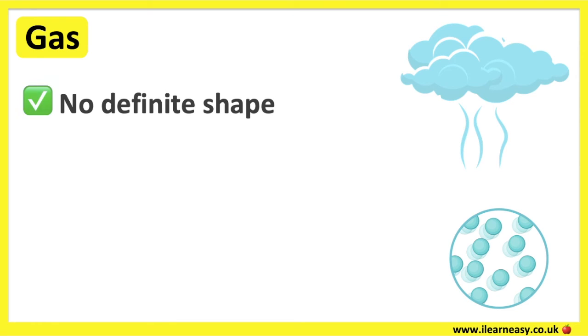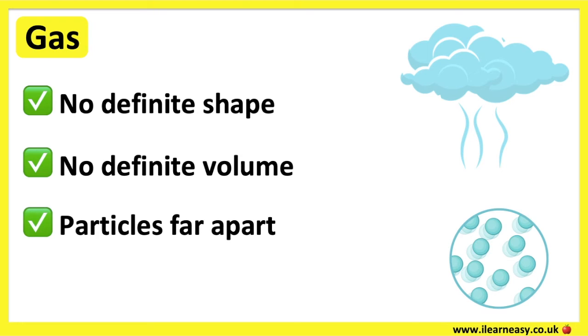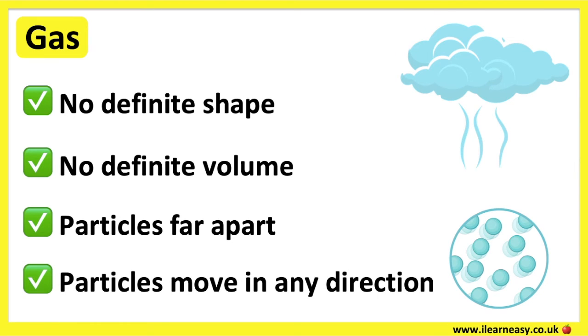Gases have no definite shape or volume. The particles in a gas have a lot of space between them and are arranged in a random way. The strength of the bonds between the atoms are weak.